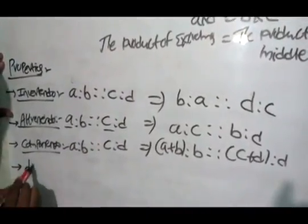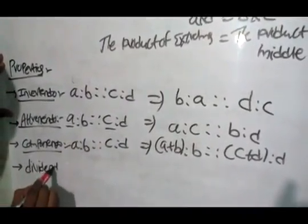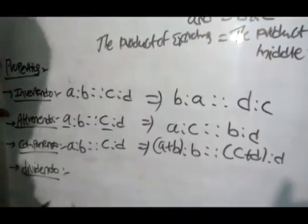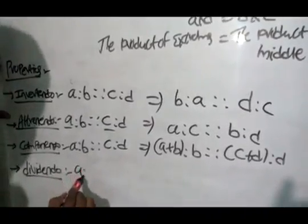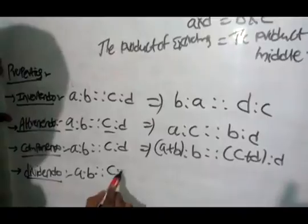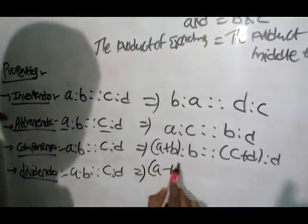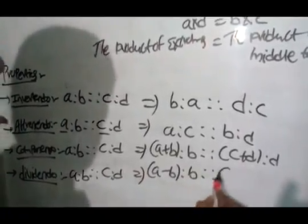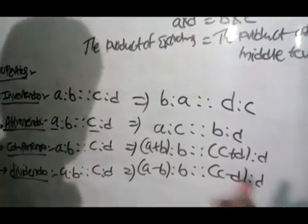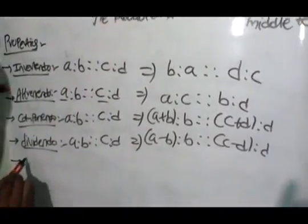Next one is dividendo. In this dividendo, that means subtraction. If a is to b equal to c is to d, the dividendo will be a minus b is to b equal to c minus d is to d.